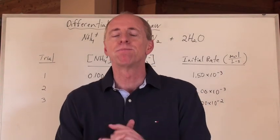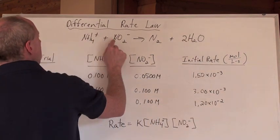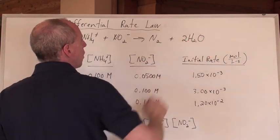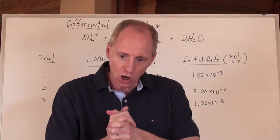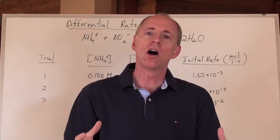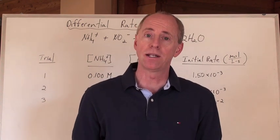So now here's a question that you can be asked. The question is, here is a chemical reaction. It's ammonium ion and nitrite ion makes nitrogen gas and two water molecules. And somebody says, okay, in terms of concentration change over time, what is going to be the rate law for this reaction, or specifically it's called the differential rate law.